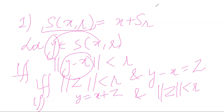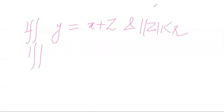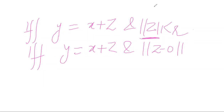So what we have got: if and only if y is equal to x plus z, and the norm of z is less than R. Now, can I write it like this: norm of z minus 0 is less than R? If and only if y equals x plus z and this condition holds.